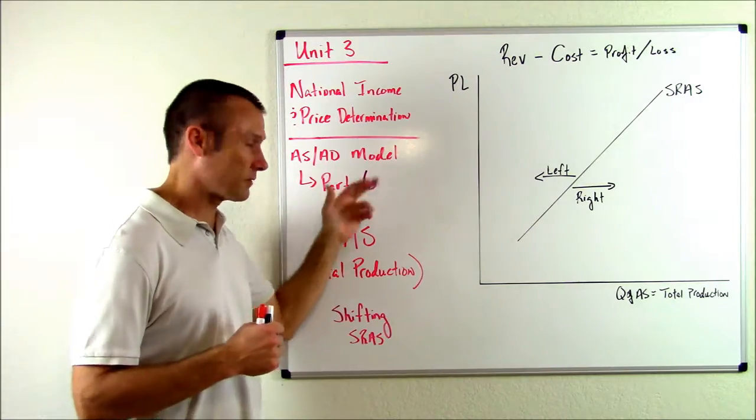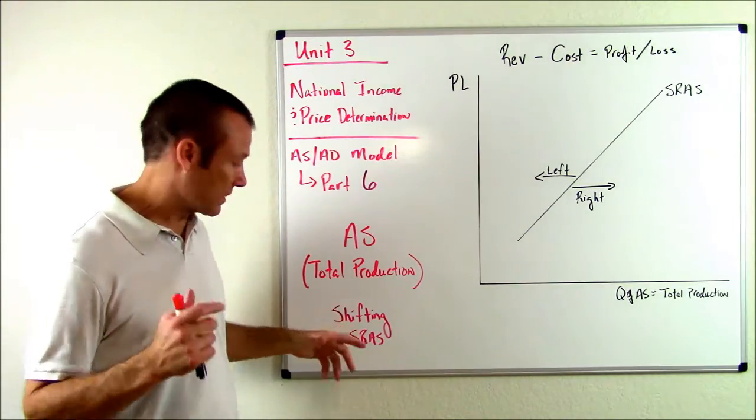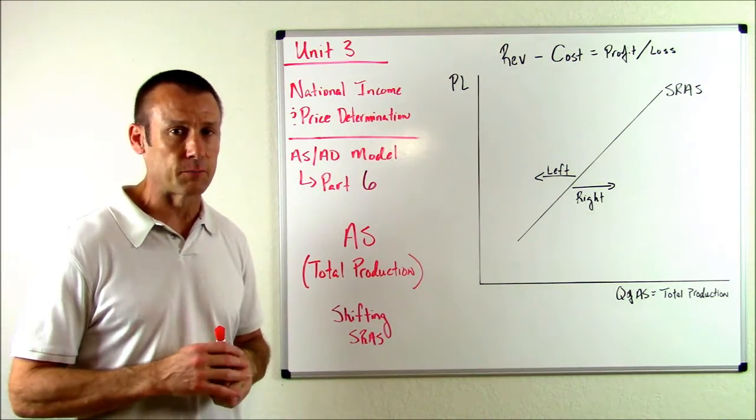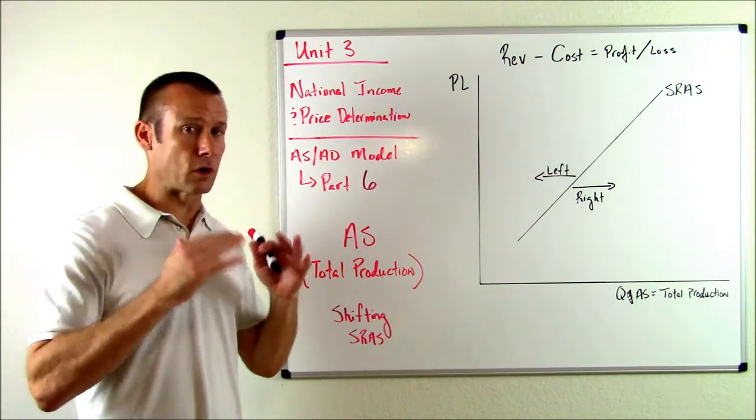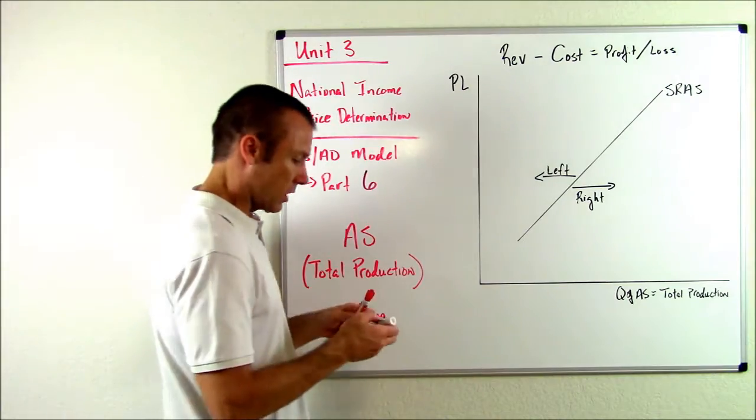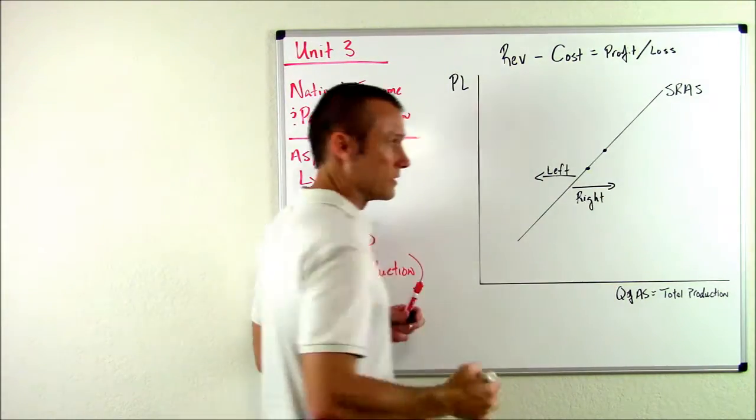All right, so we're using our AS/AD model. This is part six. What we're focusing on in this video is shifting the SRAS. What shifts the SRAS? Let's just go back and review very quickly what causes a movement along the SRAS first. What causes us to move from one point on the SRAS to another point?